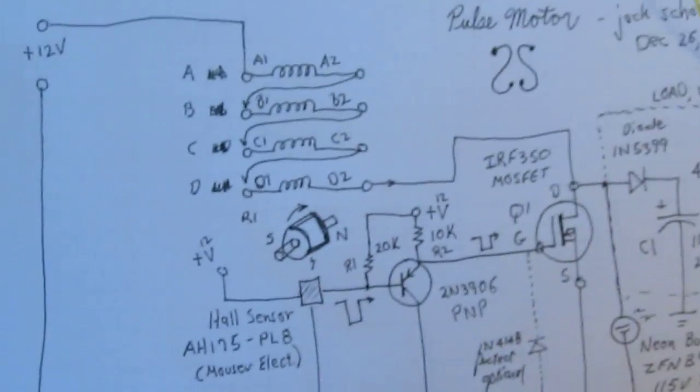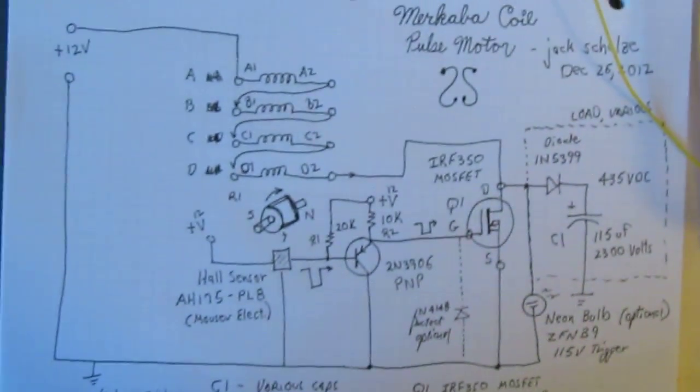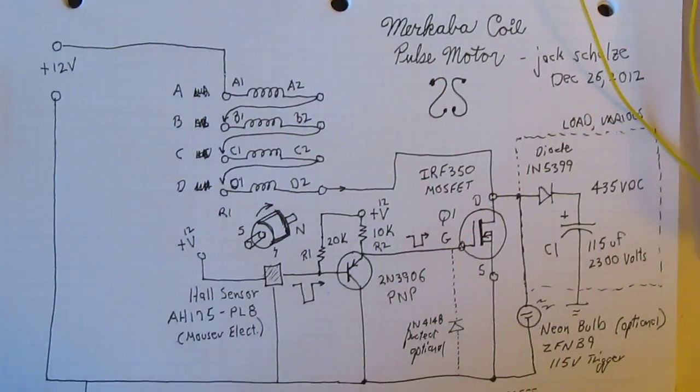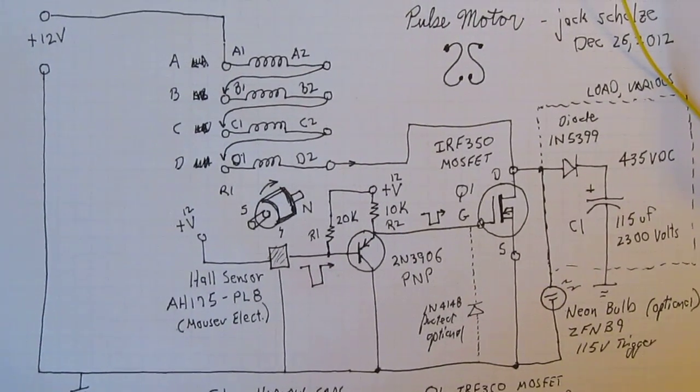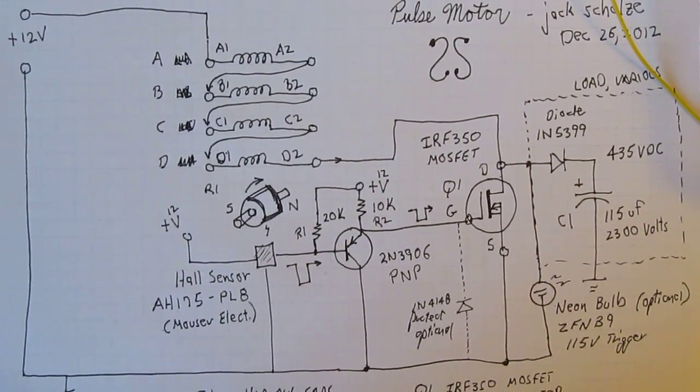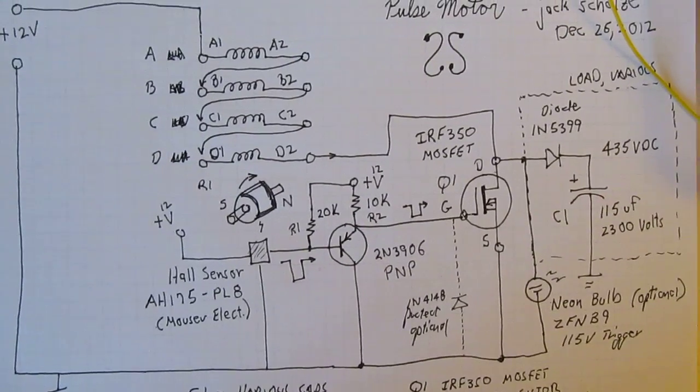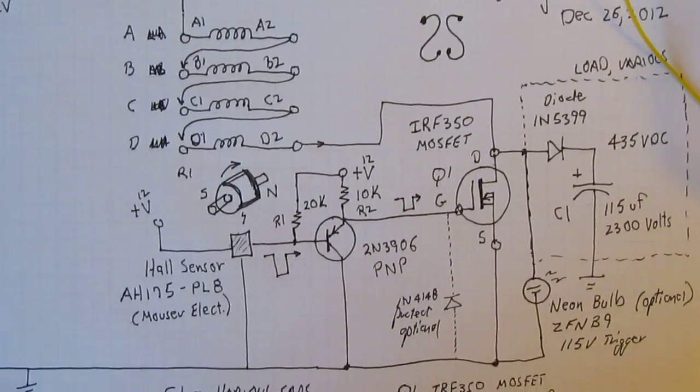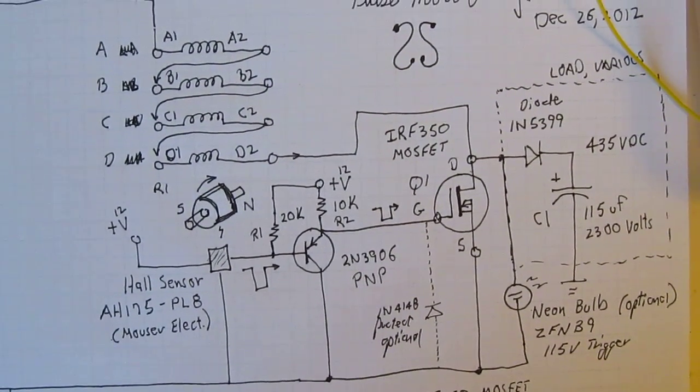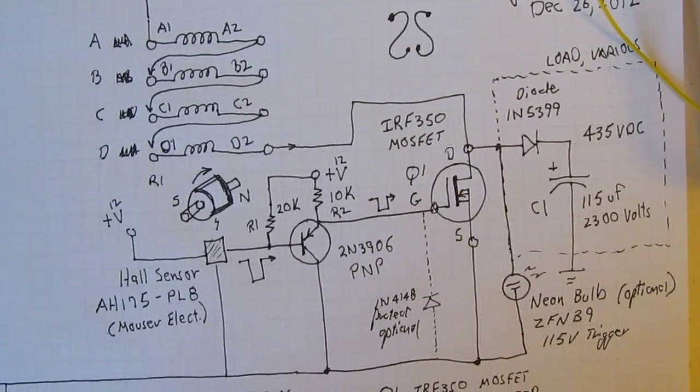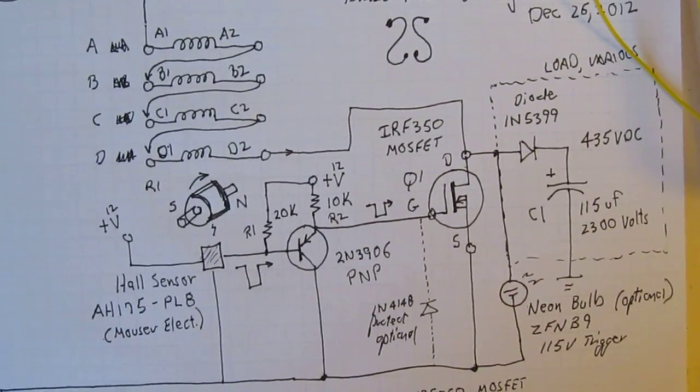And the circuit is pretty standard. I wanted to show that again, which is, there's the four coils in series. Then the sensor, which picks up a negative going pulse, the Hall sensor. And then it feeds it to the PNP transistor, the negative, which is negative on the base and it triggers the transistor.